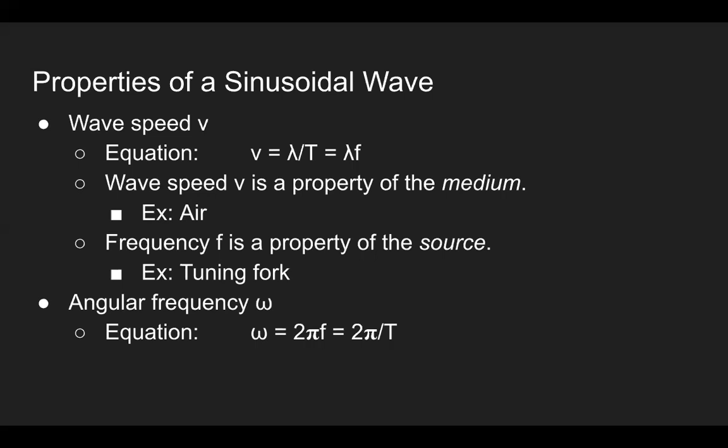It is important to note that the wave speed is a property of the medium and the frequency is the property of the source. For example, if I have a tuning fork and vibrate it, it vibrates with a unique frequency. The tuning fork is the source and it produces sound waves that travel through the air, which is the medium. We will talk more about sound waves later. If you remember from last week, oscillations and simple harmonic motion were basically sinusoidal waves, so another property to mention is angular frequency, in which the equation is shown here.